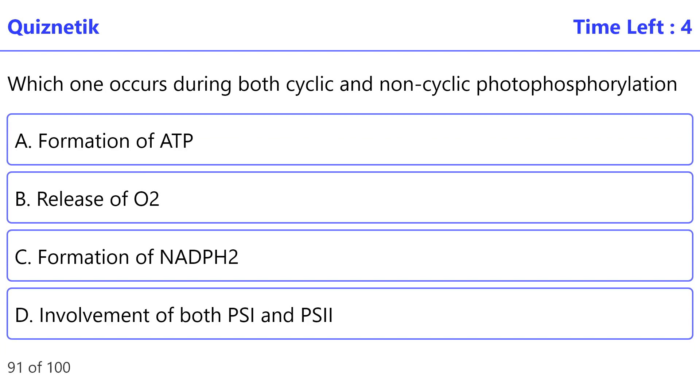Which one occurs during both cyclic and non-cyclic photophosphorylation? The correct option is A: formation of ATP.